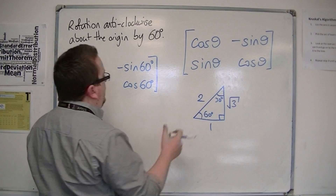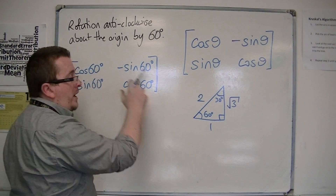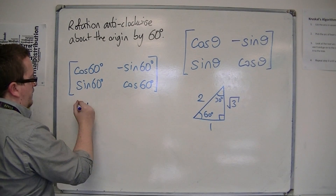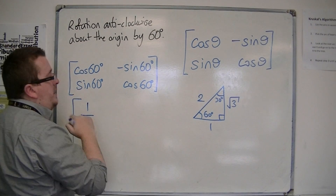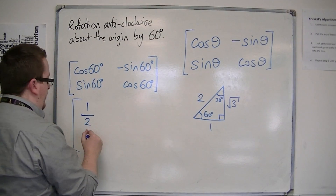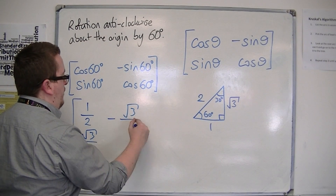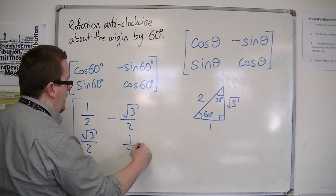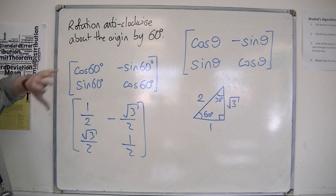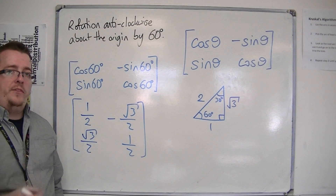Looking at 60 degrees, cos is adjacent over hypotenuse, so that's one half. Sine of 60 is opposite over hypotenuse, so root 3 over 2. That gives us minus root 3 over 2 and one half. So this is the matrix that defines the rotation anticlockwise about the origin by 60 degrees.